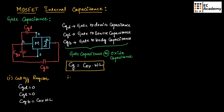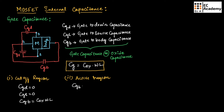In the active region, the junction between gate-drain and gate-source will be forward biased, and the junction between gate and body will be reverse biased. So CGB will be zero. The capacitance is equally distributed across CGD and CGS, giving us 1/2 COX WL across gate-drain and 1/2 COX WL across gate-source.